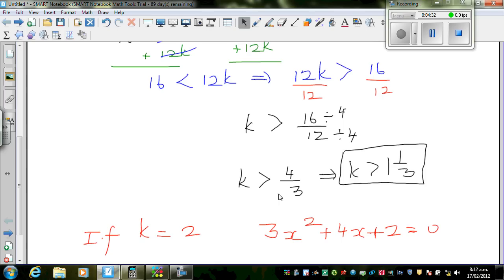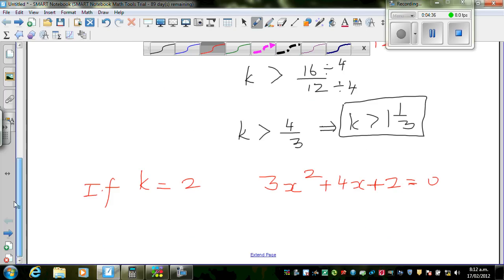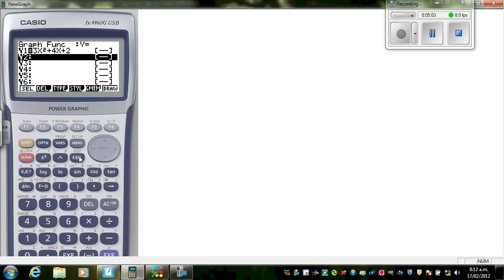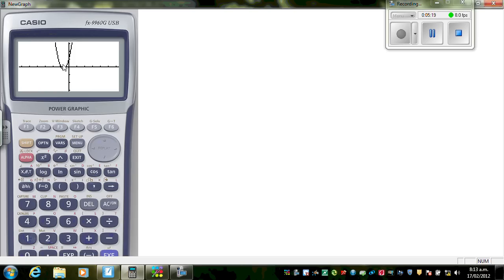So here, from this you can see. And suppose, let me take one example. Suppose what happens if k equals 1. If this is not satisfying this relationship, k has to be greater than 1 and 1/3. So if I take k equals 1, the equation would become 3x² + 4x + 1. Let's see what happens. So here, exit, delete, yes, okay. And I'm going to type in 3x² + 4x + 1 and see what happens. Here, it's intersecting the x-axis. You've got 2 roots.